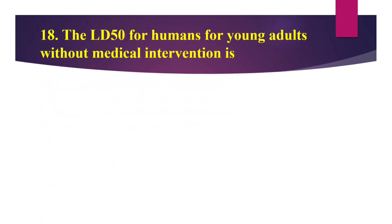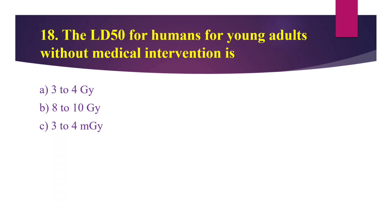Moving on to the next question, question number 18. The LD50 for humans for young adults without medical intervention — LD means lethal dose — is: option A, 3 to 4 gray; option B, 8 to 10 gray; option C, 3 to 4 milligray; and option D, 3 to 4 centigray. Gray is the unit of absorbed dose.